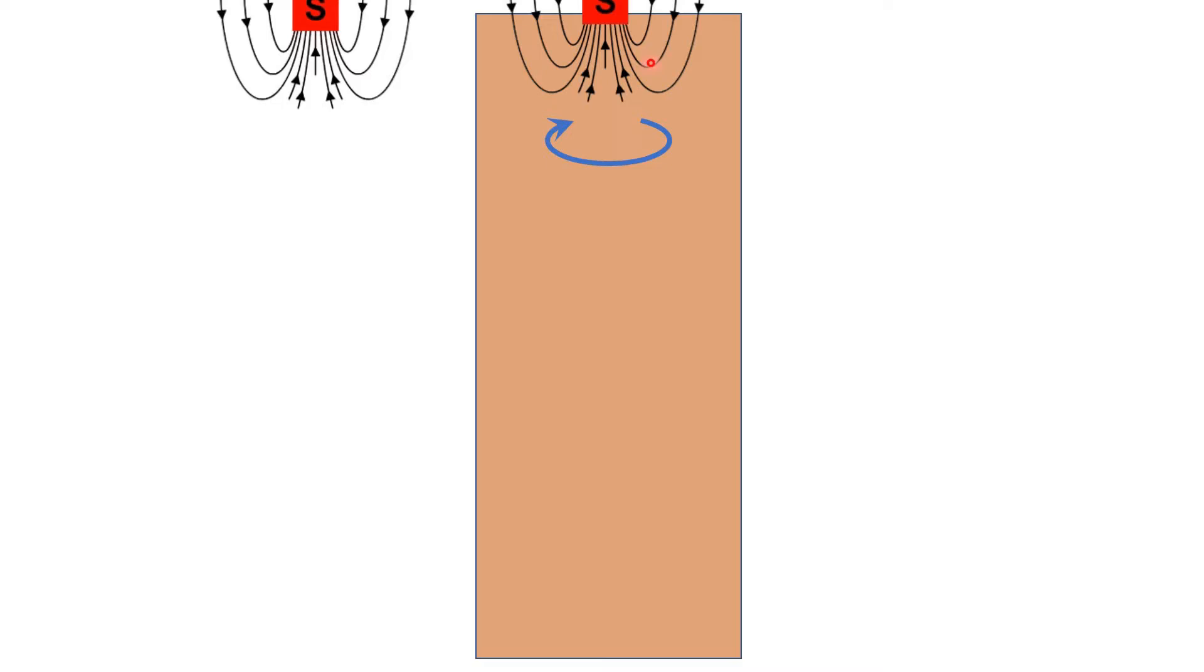The reason is if you have a magnet that is falling down due to gravity, it changes the magnetic field that this point here feels. And change in the magnetic field means induction of currents. And the current is such a way that it tries to compensate the change of the magnetic field.